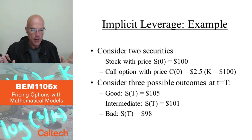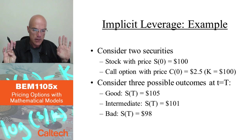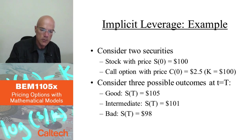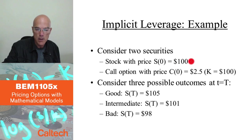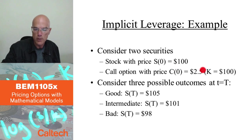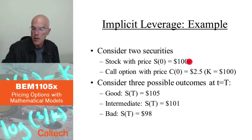Let's look at a stock and the call option on this stock. Let's assume that the stock price today — denoted at time zero — is $100. There is a call option on the stock, and the call option price today is $2.50, and the strike price is $100. These are not necessarily unrealistic numbers; this may happen.